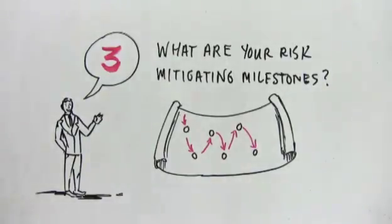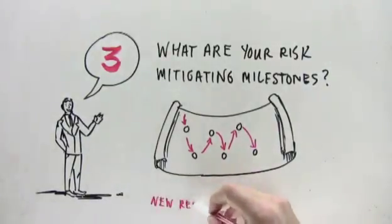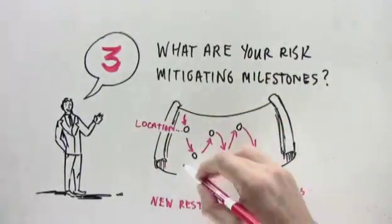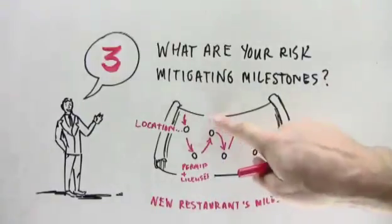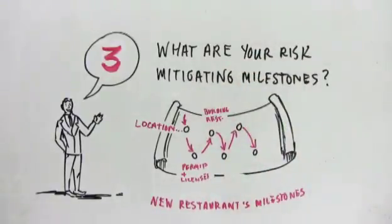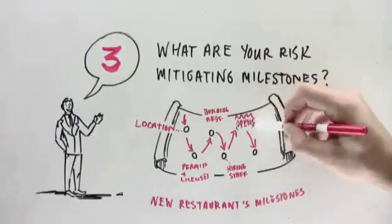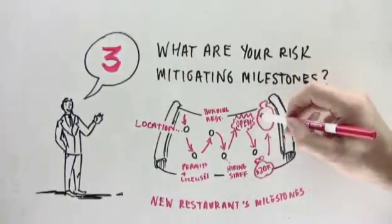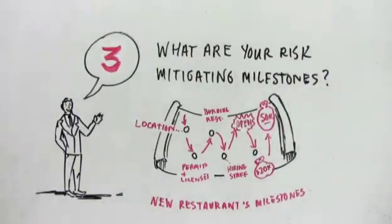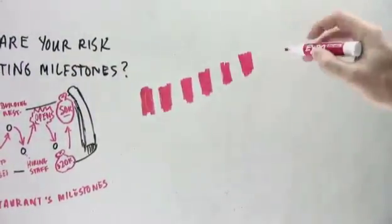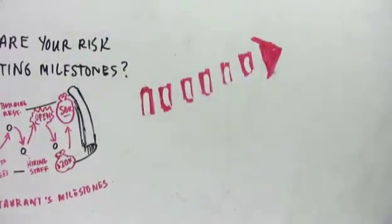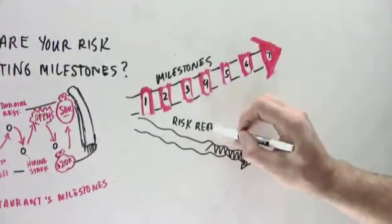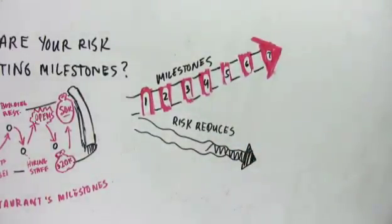So let me give you an example. I'll give you an example of a restaurant because most people can understand the restaurant concept. So a new restaurant's milestones may include finding the location, getting the permits and licenses, building out the restaurant, hiring and training the staff, opening the restaurant, maybe reaching $20,000 in monthly sales, maybe reaching $50,000 in monthly sales. Now, as you can see, each time the restaurant achieves a milestone, the risk to the investor or lender decreases significantly. And by the time the business reaches its last milestone, it has virtually no risk of failure at all.